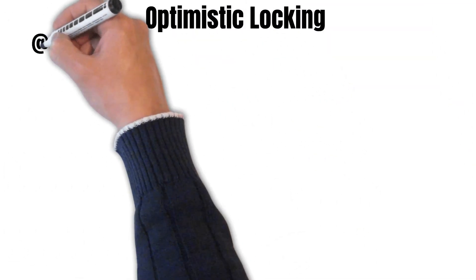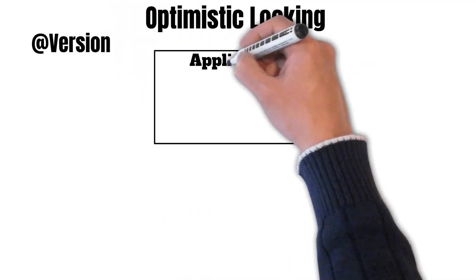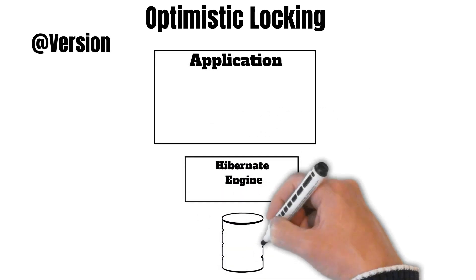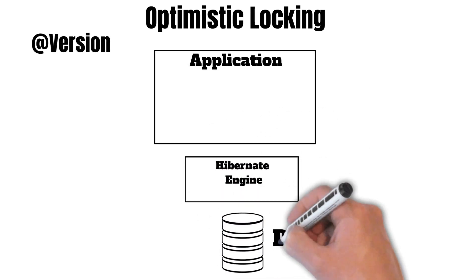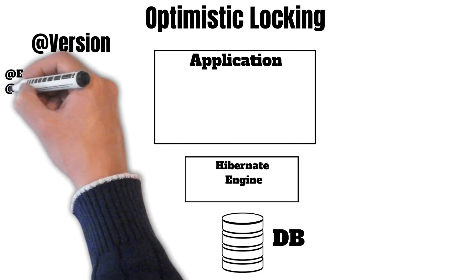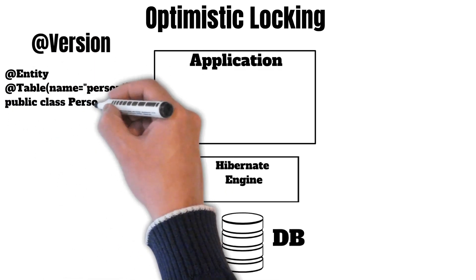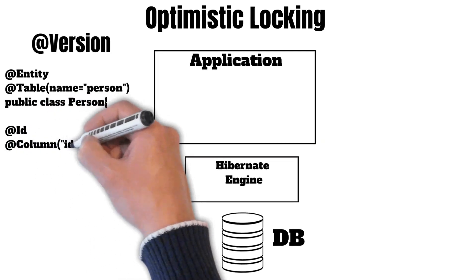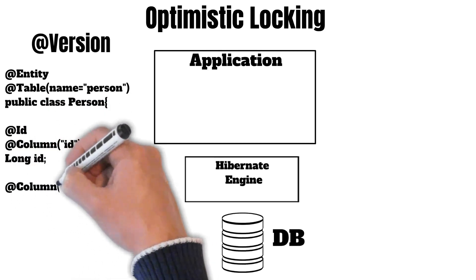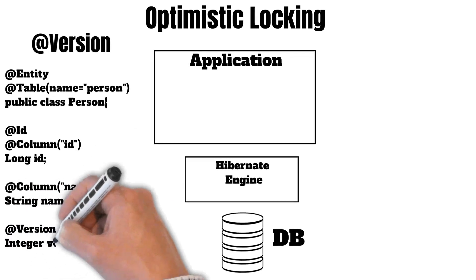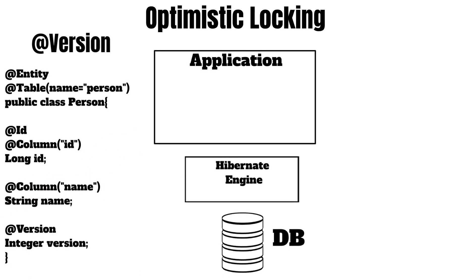Let's talk about optimistic locking. Optimistic locking is achieved using the version property. Generally we have an architecture where we have our application layer followed by the Hibernate engine which interacts with the database. Suppose we have an entity class Person which maps to the person table. It has two columns: id with the property id, and name with the property string, and it also has a version property annotated with the @Version annotation.